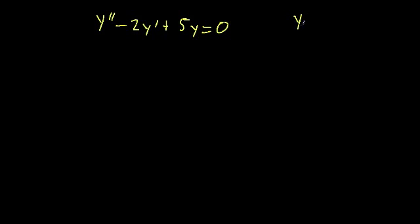We know by now to test out the solution y equals e to the rt, and if we do that we'll get the characteristic equation r squared minus 2r plus 5 is equal to 0.